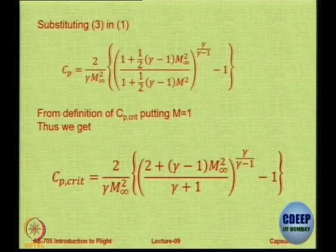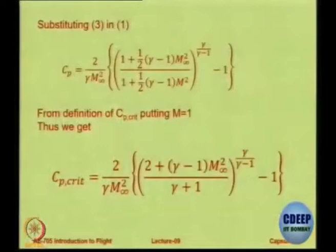Notice where the aerofoil geometry is in this expression — there is no thickness, no camber, nothing. It is just a function of M infinity. So you can call it a universal expression for Cp critical. Just put the value of M infinity and you will get Cp critical. Remember, it is only Cp critical, not M critical — just the value of Cp.